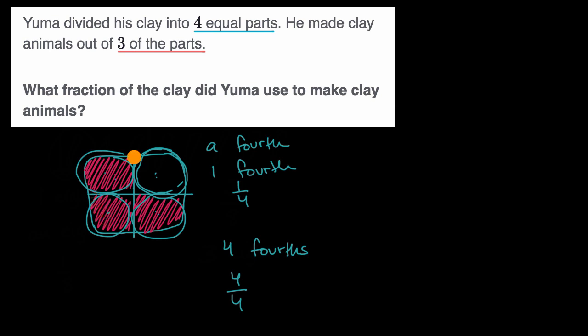Now if you wanted to say, what fraction of the clay did Yuma use to make clay animals? We can see that three of the fourths were used to make clay animals. So to answer that question, we would say three of the fourths. So three fourths were used to make clay animals. You can also express that as a fraction. You could also write that as three fourths, like this. You would read these the same. Three fourths, or three fourths. Three out of the four equal sections of clay were used to make the clay animals.